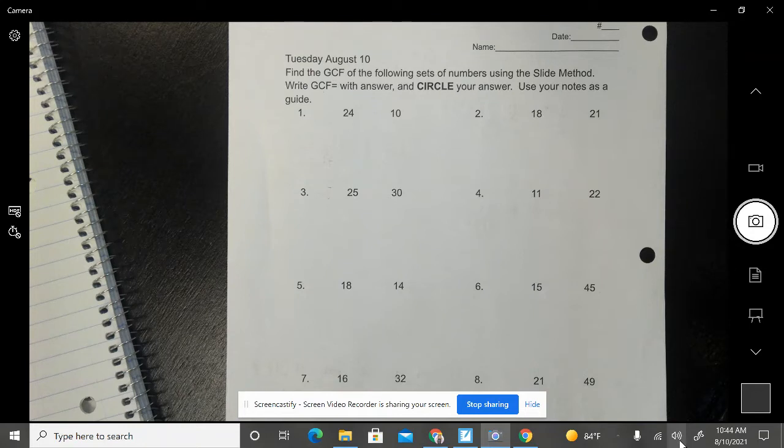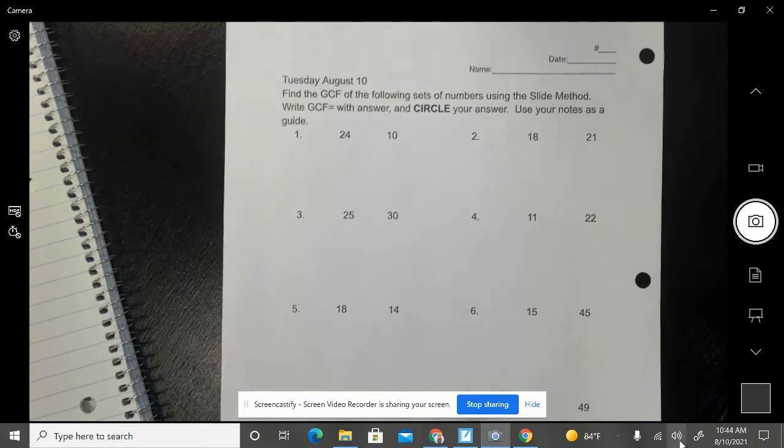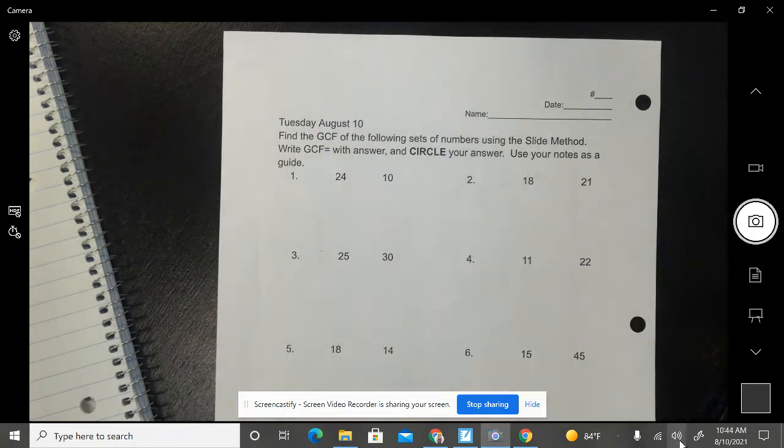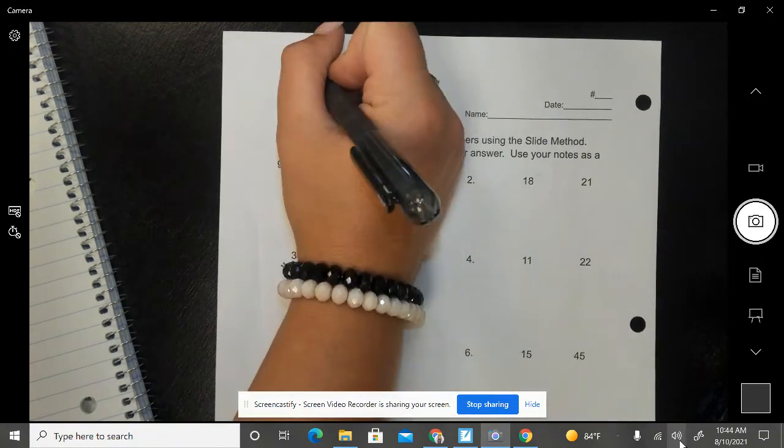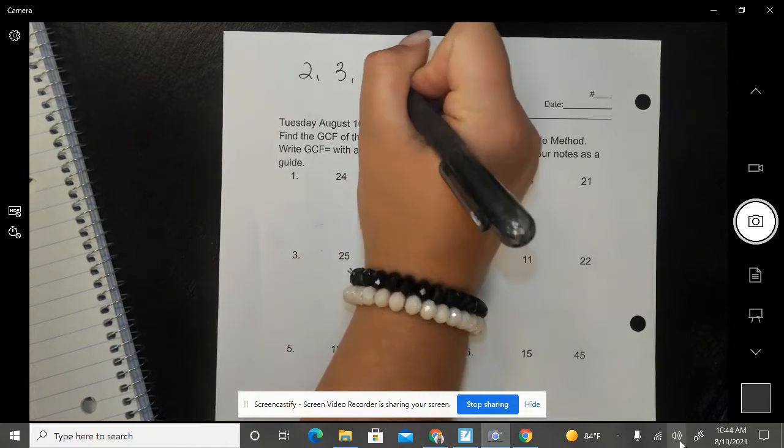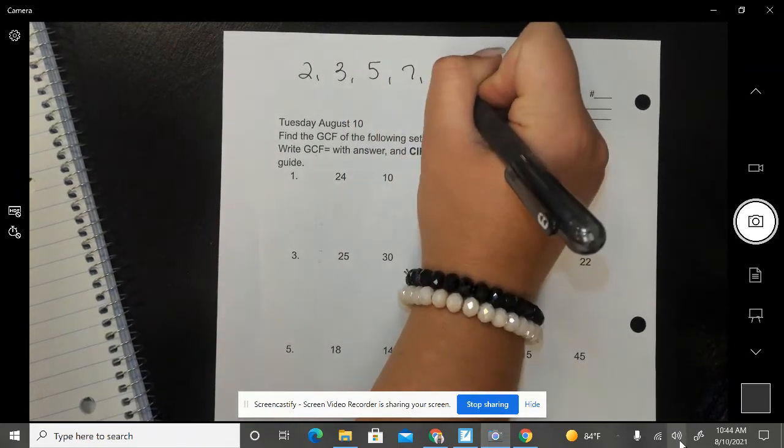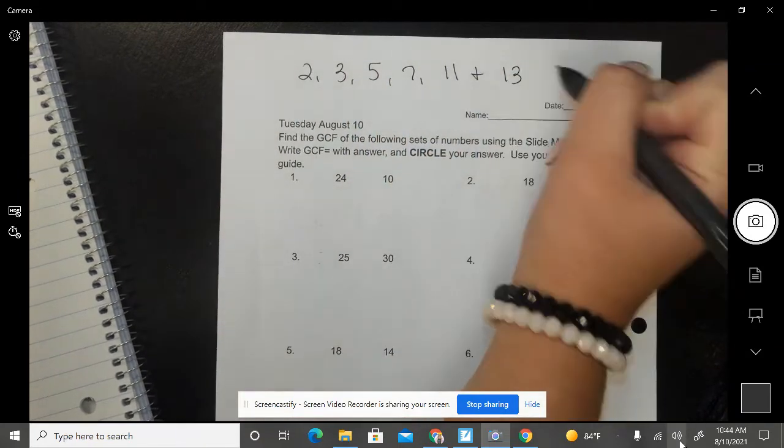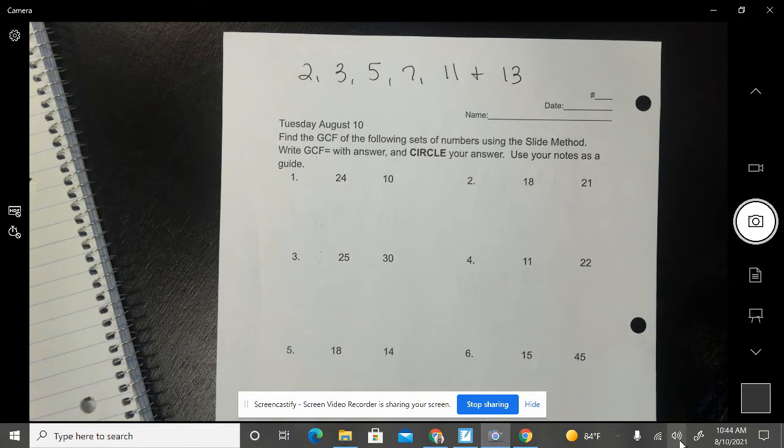So I'm going to start us off by writing the numbers up at the top. The numbers we always use are 2, 3, 5, 7, 11, and 13. Remember if I write it you write it as well.